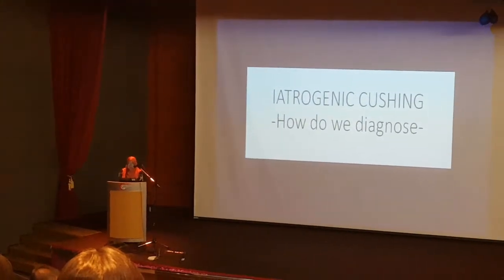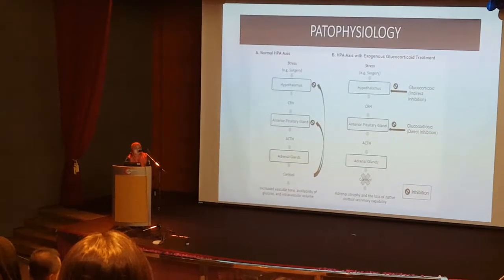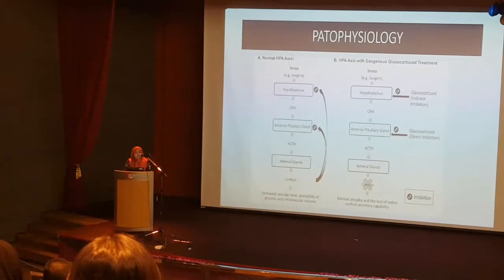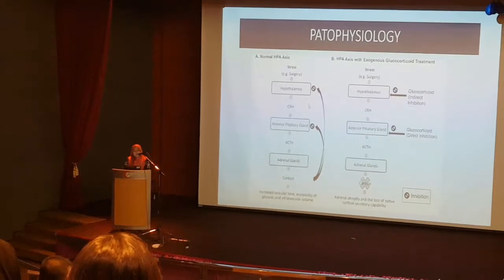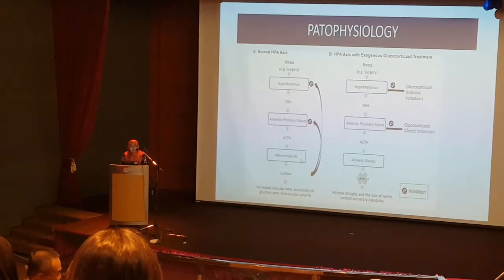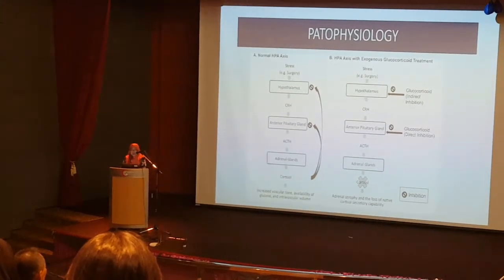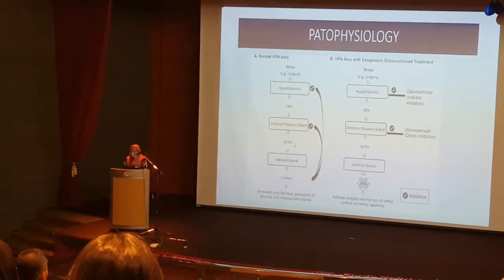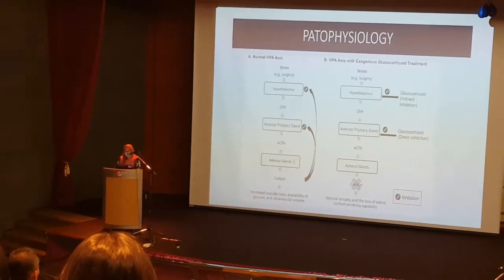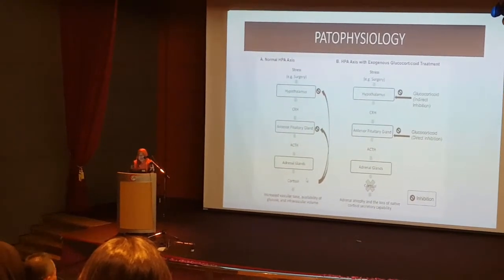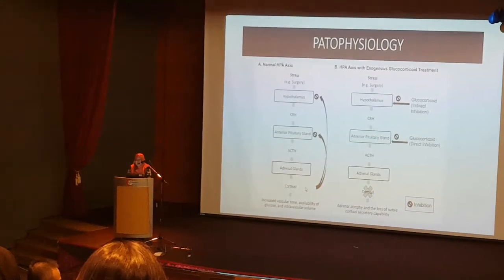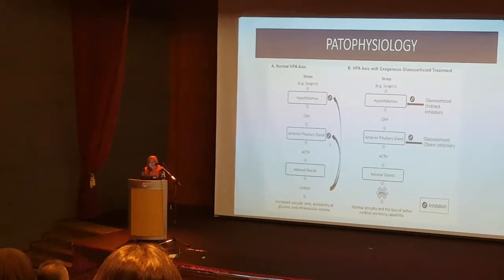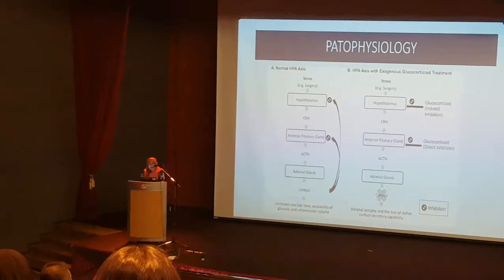So how do we diagnose Cushing's? This is the pathophysiology — don't worry, it's just a simple one. If you see diagram A, this is the normal HPA axis: the hypothalamus, anterior pituitary gland, and adrenal gland. In normal circumstances, the anterior pituitary secretes ACTH, which stimulates the adrenal glands to secrete cortisol. When cortisol is sufficient or high, it provides negative feedback to the hypothalamus and anterior pituitary, reducing ACTH production.